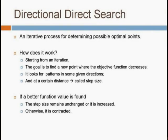How does the directional direct search work? Starting from a given iteration, the goal is to find a new point where the objective function will decrease. It looks at the pattern in some given directions at a certain distance — called the step size. If a better function value is found, then the step size can remain the same or be increased; otherwise, it is contracted.